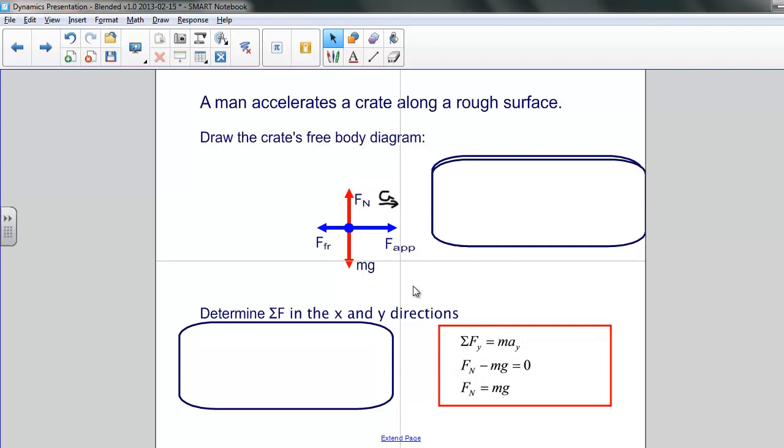The sum of these forces, the normal force pointing up and the weight, mg, pulling down. So from this equation, we can see right away that the normal force and the weight are equal in magnitude.